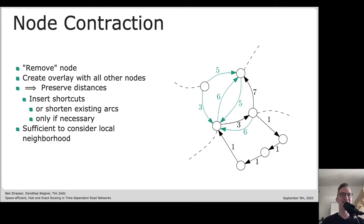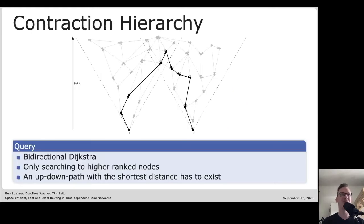This augmented graph is very useful because we can do a very effective query algorithm: do a bidirectional Dijkstra search starting from both the start node and the end node, and both searches only search to higher rank nodes. Because of this overlay property and the way that we constructed the graph, there will always be a shortest path which first only goes up, which the forward search will find, and then going only down, which the backward search will find. This query algorithm yields speedups over Dijkstra by four orders of magnitude, so it's very effective and is employed quite successfully in practice.